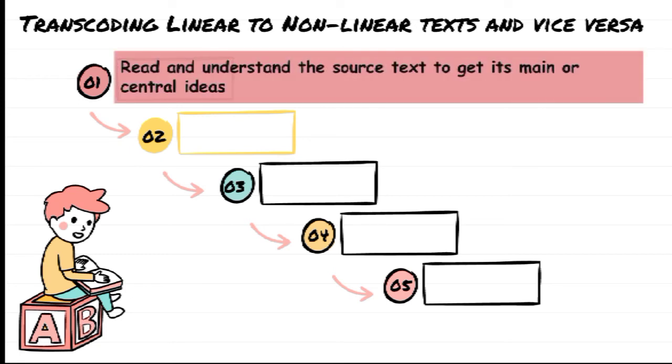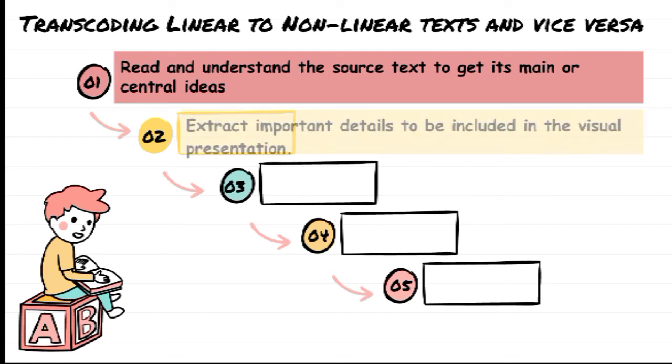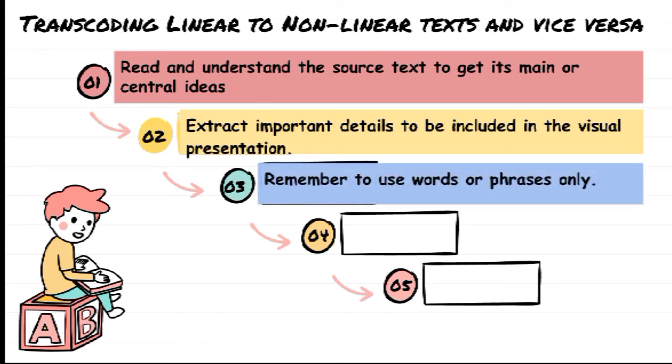To transcode linear text to a non-linear text, one may follow these steps. First, read and understand the source text to get its main or central ideas. Step two, extract important details to be included in the visual presentation. Step three, remember to use words or phrases only.